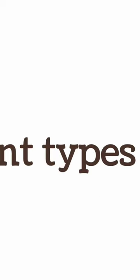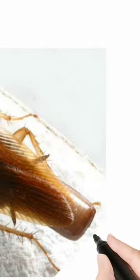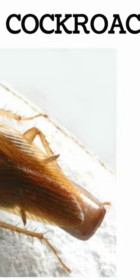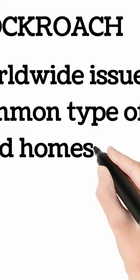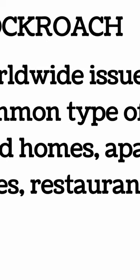Different types of cockroaches. German cockroach: they are a worldwide issue and are the most common type of cockroach found around homes, apartments, grocery stores, and restaurants.